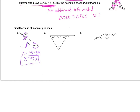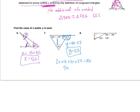Moving on to number 7. I can solve for Y right away because this is a straight angle. So Y equals 180 minus 57, which gives Y equals 123. Now I know these three angles add up to 180 in a triangle. So I can say 2X plus 13 plus 3X plus 37 equals 180. Continuing: 5X plus 70 equals 180. Subtracting 70 from each side: 5X equals 110. So X is going to be 26.